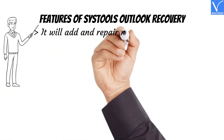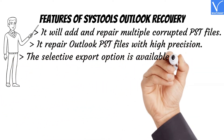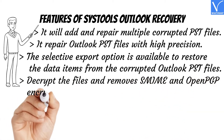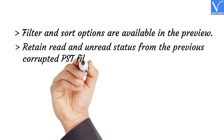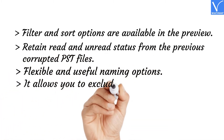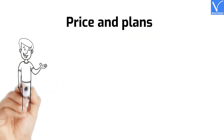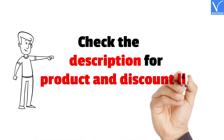Features of SysTools Outlook Recovery: It will add and repair multiple corrupted PST files. Repairs Outlook PST files with high precision. Selective export option is available to restore data items from corrupted Outlook PST files. Decrypts files and removes S/MIME and OpenPGP encryption from Outlook messages. Recovers permanently deleted Outlook messages and other data. Filter and sort options are available in the preview. Retains read and unread status from previous corrupted PST files. Flexible and useful naming options. Allows you to exclude or delete empty folders. The price and plans of SysTools Outlook Recovery Tool are shown on the screen. Our viewers get a special 15% discount on all SysTools Outlook Recovery licenses. The product and discount links are provided in the description.